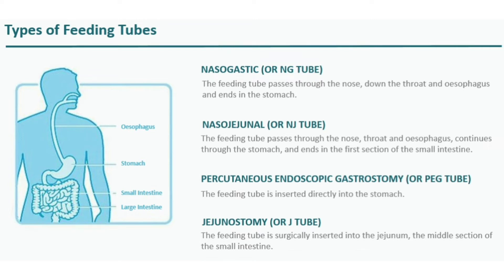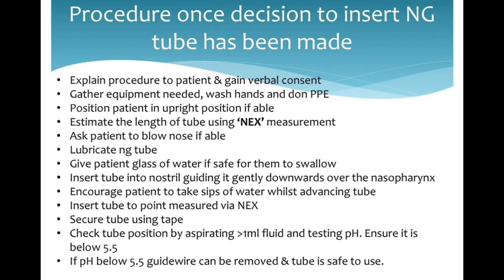There are several types of feeding tubes. First is the nasogastric tube, where the feeding tube passes through the nose, down the throat and esophagus, and ends in the stomach. Second is the nasojejunal tube, where the tube passes through the nose, throat, and esophagus, continues through the stomach, and ends in the first section of the small intestine. Third is percutaneous endoscopic gastrostomy, where the feeding tube is inserted directly into the stomach. Fourth is jejunostomy, where the feeding tube is surgically inserted into the jejunum, the middle section of the small intestine.